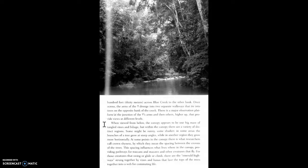At some points in the canopy there is what researchers call crown shyness, by which they mean the spacing between the crowns of the trees. The spacing influences what lives where in the canopy, providing pathways for toucans and macaws and other creatures that fly. For those creatures that swing or glide or climb, there are the emerald highways, strung together by vines and lianas.